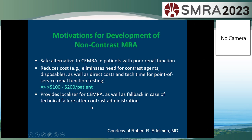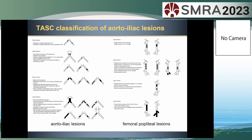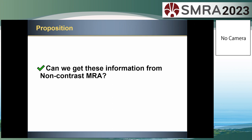First, what is the motivation for development of non-contrast MRA? A safe alternative in patients with poor renal function, reduced cost, or providing localization or fallback of contrast-enhanced MRA? What is required for vascular imaging of peripheral arteries? In TASK2 classification, the severity of peripheral arterial disease is determined by location, degree, and extent of the stenosis, which is used as an indicator for patient treatment strategies. Can we get this information from non-contrast MRA?